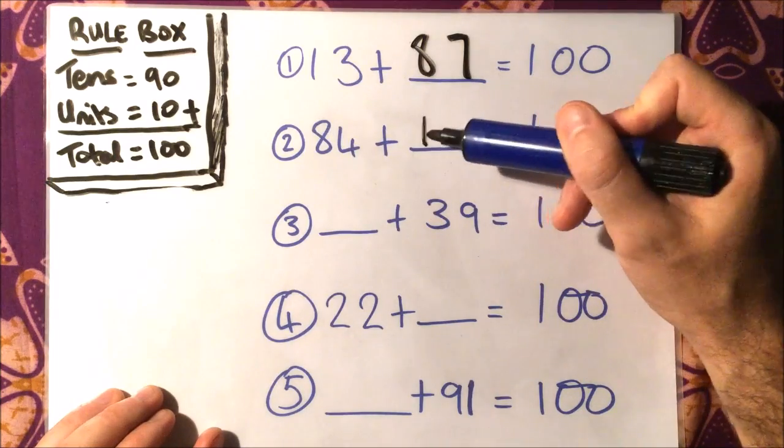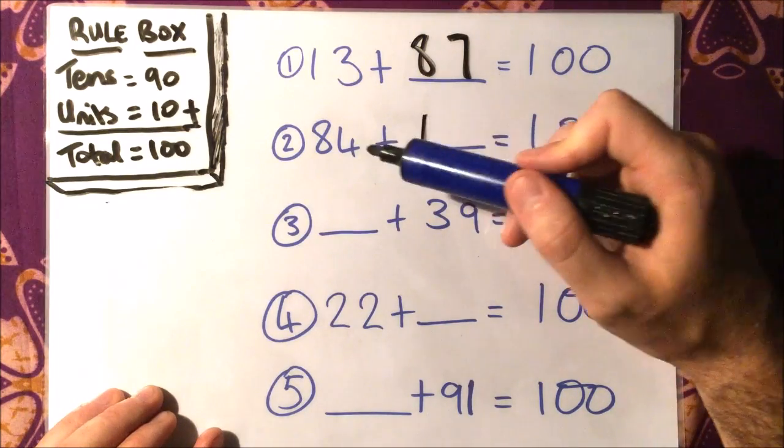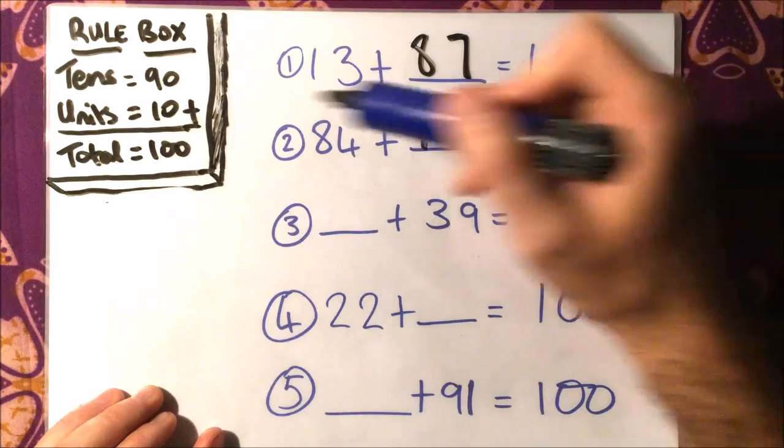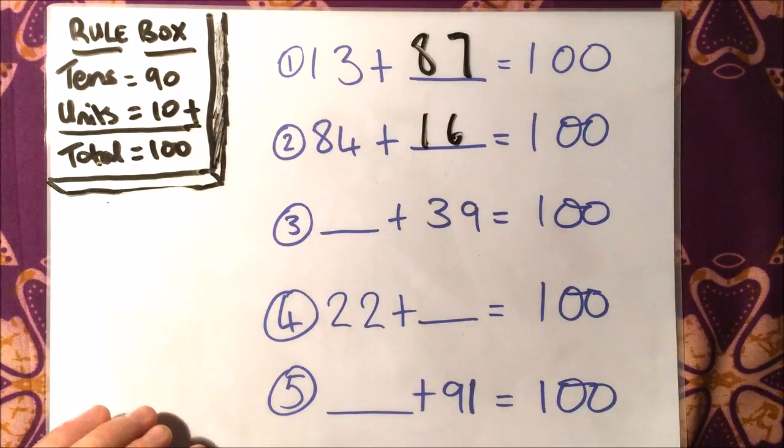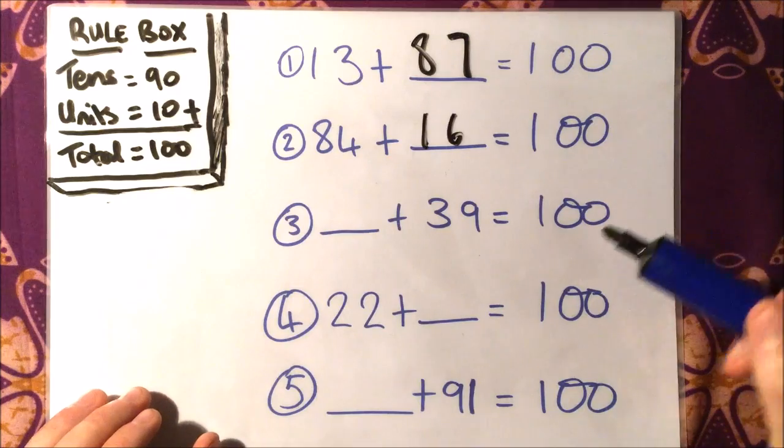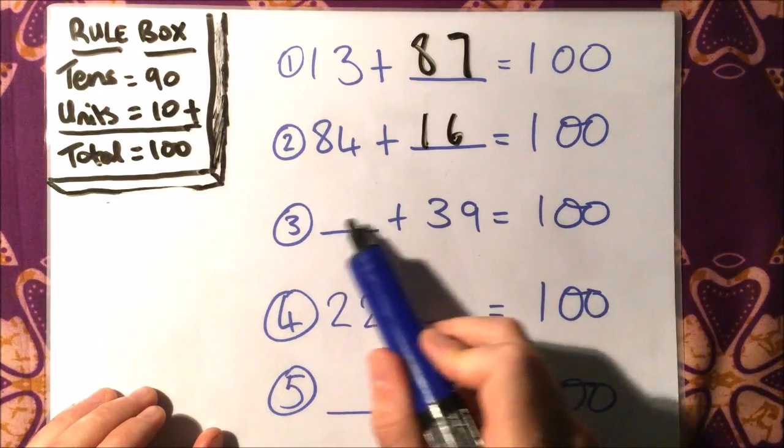I know that I just need to add 10 to 80 to make my 90, and 4 just needs a 6 to make the other 10 for the units, so 84 and 16 makes 100. Now the number missing is here. It doesn't matter. You do the same thing.